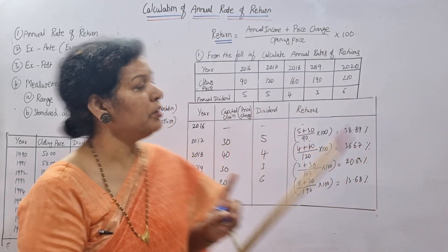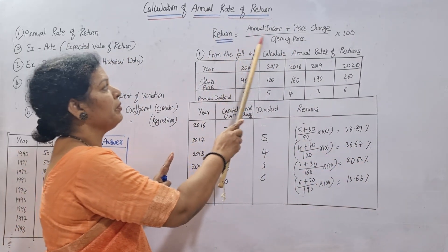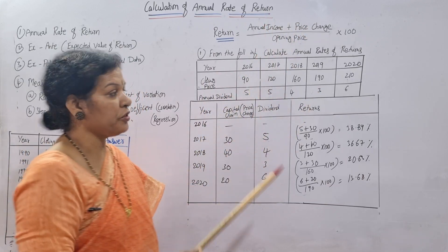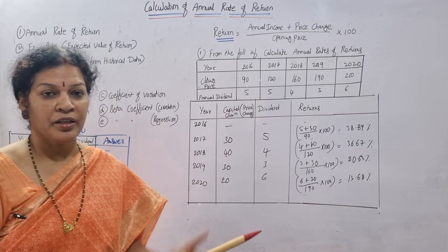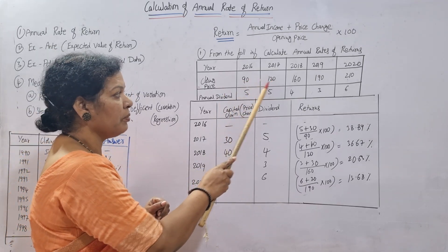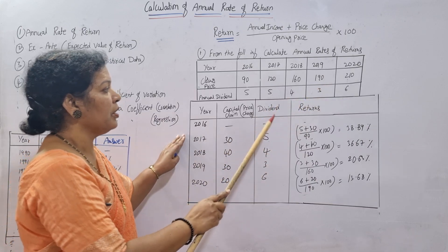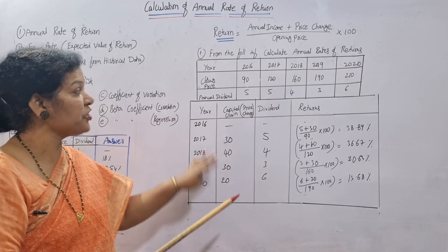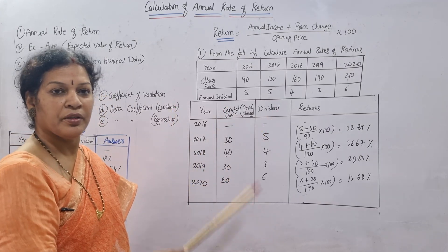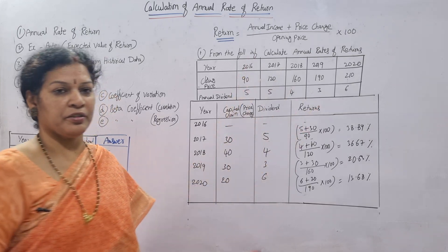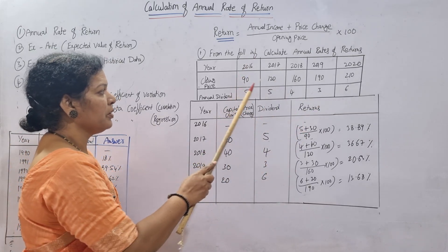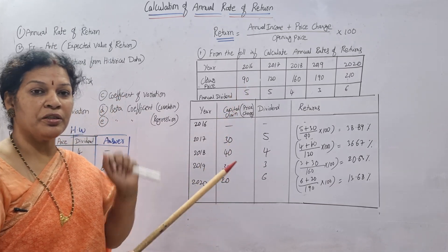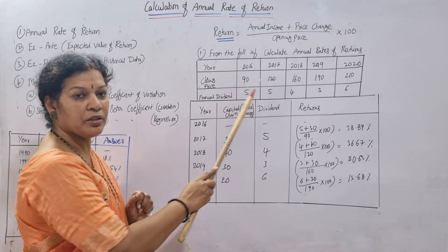To summarize what we did: we followed the formula using the given dividend as annual income and closing price to compute price change. Price change is always the difference between the current year's closing price and the previous year's closing price. For example, 120 − 90 = 30 for 2017, and the previous year's closing price serves as the opening price.